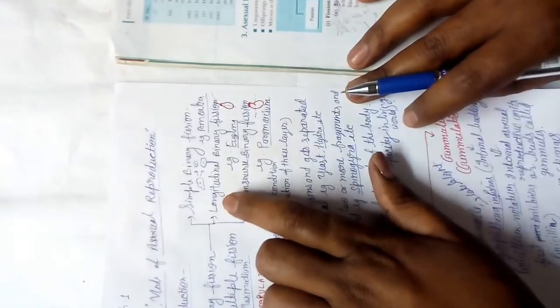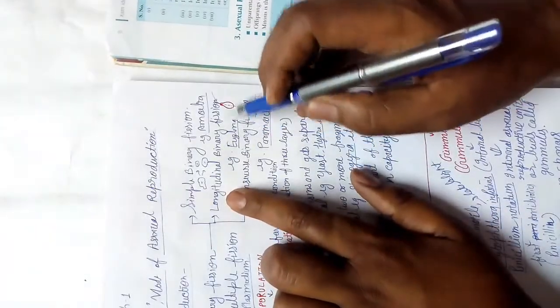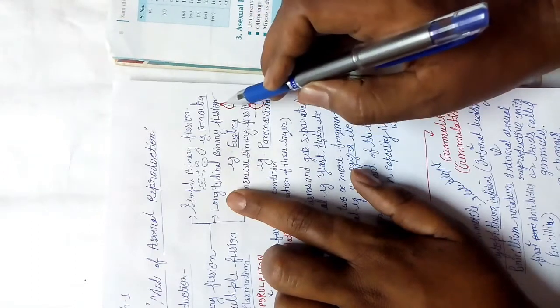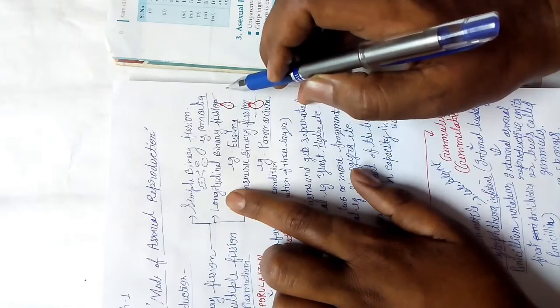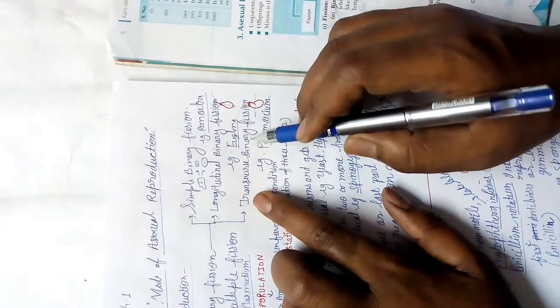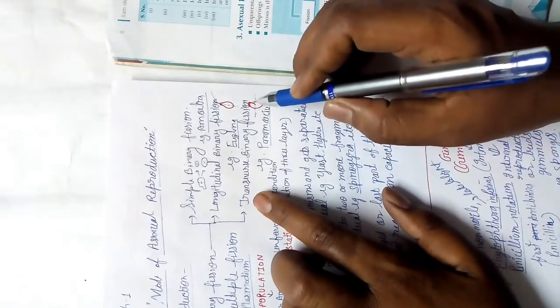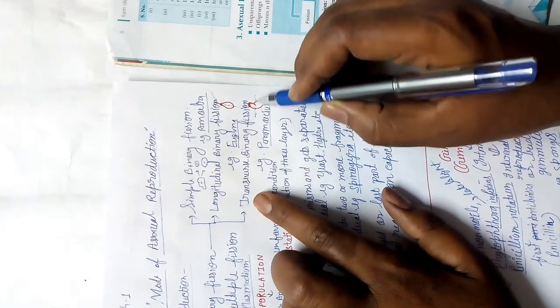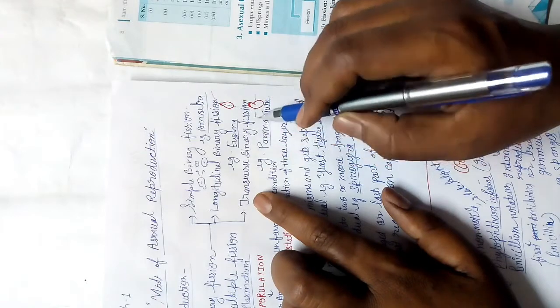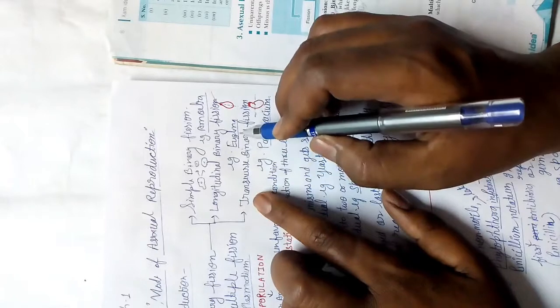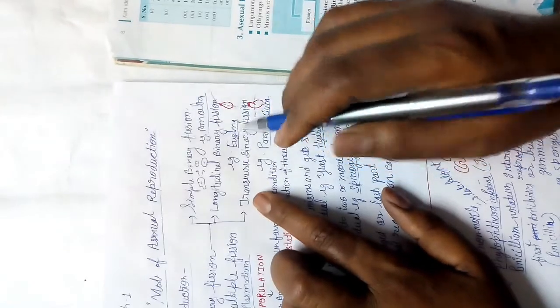Longitudinal binary fission means the plane of division runs longitudinally. Transverse binary fission means the parent body divides transversally — the plane of division is transverse. The example of transverse binary fission is Paramecium, and the example of longitudinal binary fission is Euglena.